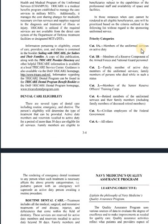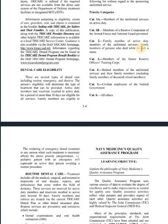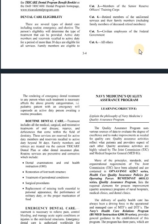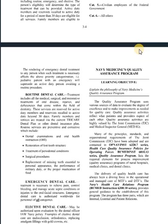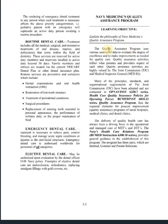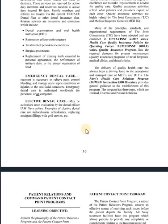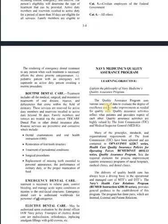There are some priority category codes. Category 1A: members on active duty. 1B: reservists. Category 2: active duty family members. Category 3: members of the Senior Reserve Officer Training Corps. Category 4: retirees. Category 5: civilian employees. Category 6: everyone else. Routine dental care describes standard services, and elective dental care examples include malocclusions, orthodontics, and replacing amalgam with gold crowns.